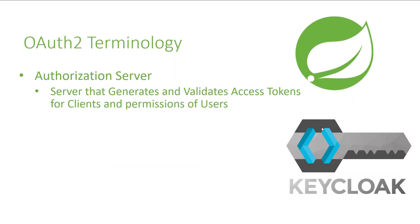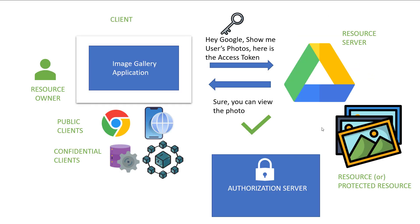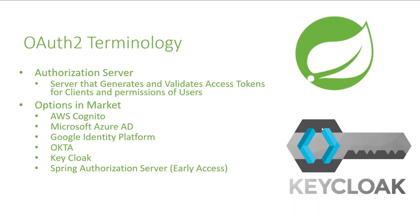The last key term is the authorization server — the server that generates and provides access tokens to the client and verifies whether an access token is valid. There are many options available: Amazon's AWS Cognito, Google's Identity Platform, and Okta are the well-known authorization servers. If you want to manage authorization on your own, Keycloak is a very good option — it's an open source offering, and in this tutorial we'll mainly see how to implement OAuth2 patterns using Keycloak.